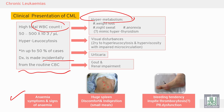Anemia, a huge spleen, and bleeding tendency are also present — in spite of thrombocytosis and increased platelet count, the problem lies in platelet dysfunction. So, leukocytosis with splenomegaly along with these symptoms and signs can lead to the diagnosis of chronic myeloid leukemia.